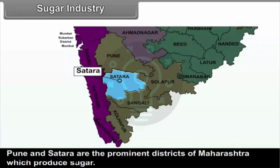C. Aurangabad Division — Sugar industries have been set up at Aurangabad, Latur, Hingoli, Beed, Parbhani, Nanded, Jalna and Osmanabad districts. D. Nagpur-Amravati Division — Sugar industries have been set up at Yavatmal, Buldana, Amravati, Akola, Wardha, Nagpur and Bhandara districts.